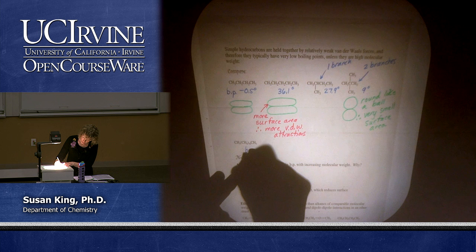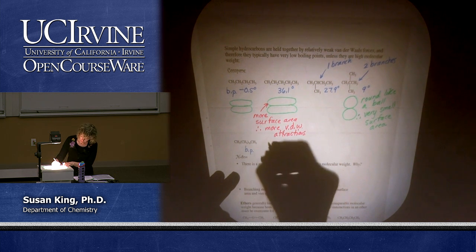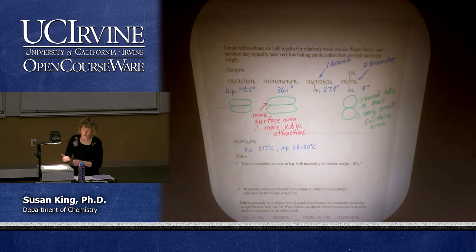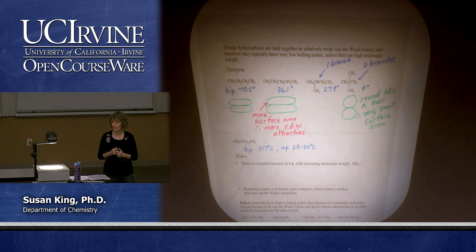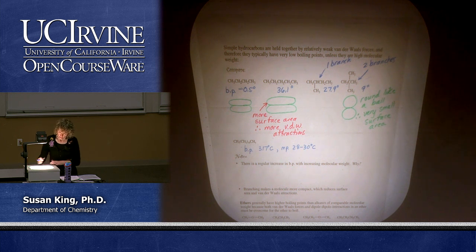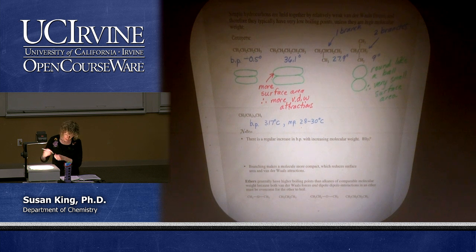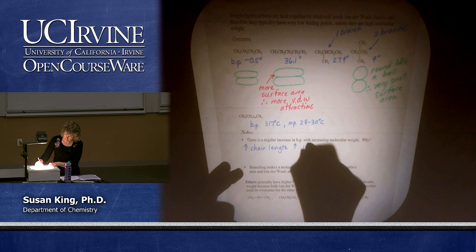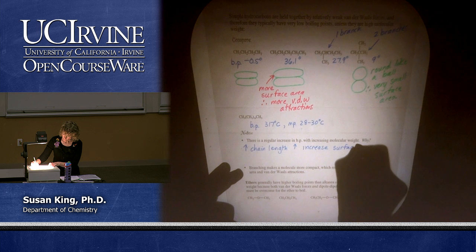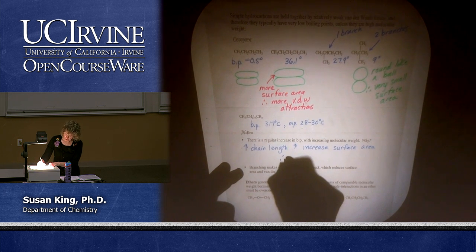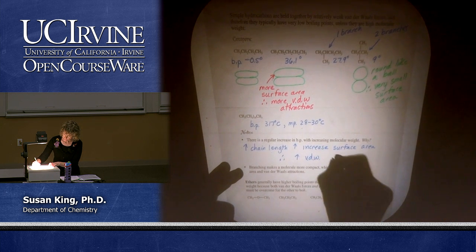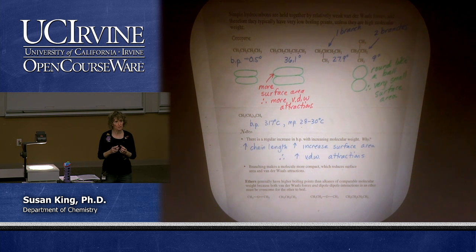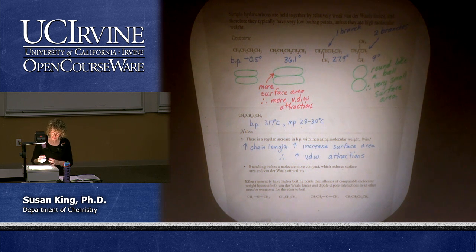Going all the way to octadecane, the boiling point is 317°C and the melting point is 28–30°C — a huge molecule with a lot of surface area, so Van der Waals attractions become quite large. There is a regular increase in boiling point with increasing molecular weight. If we increase chain length, we increase surface area and therefore Van der Waals attractions. Branching minimizes surface area, making the molecule more compact, which reduces Van der Waals attractions.